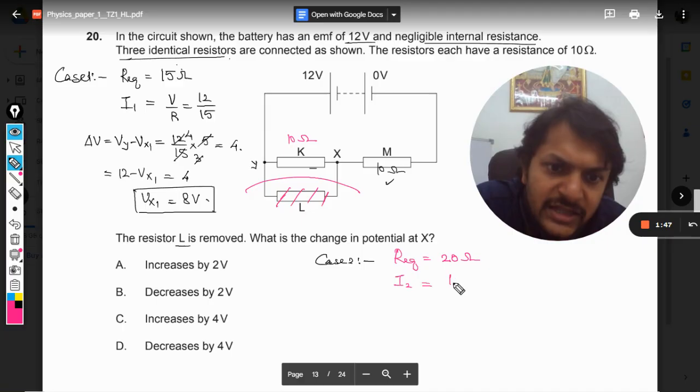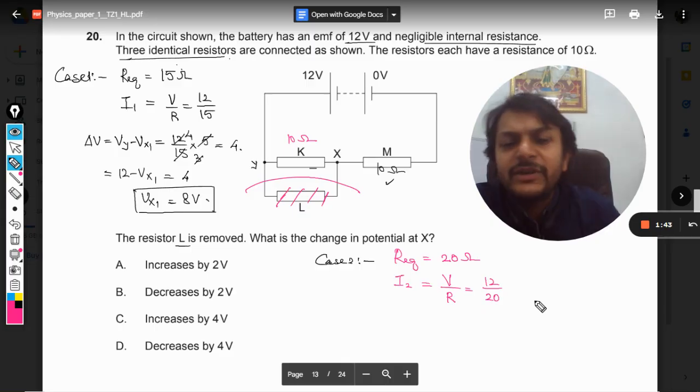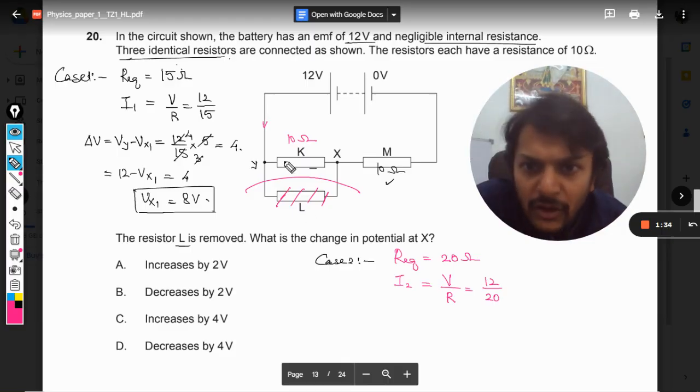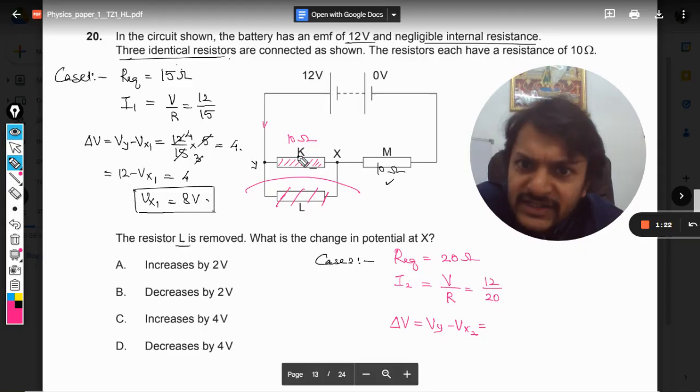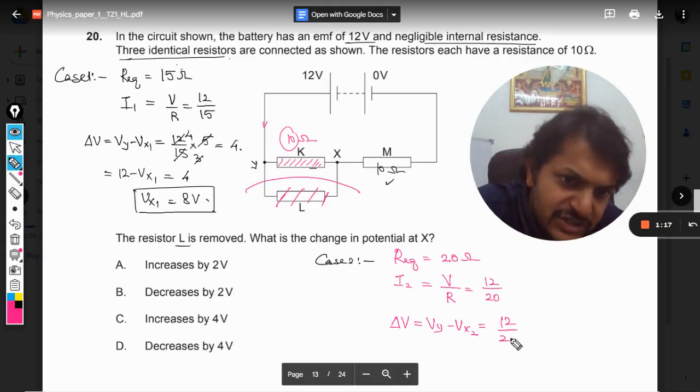So what is the current in the second case? The voltage is still 12, so it will be 12 divided by 20. So this is the current now which is coming out of the battery. Now this resistance is 10 ohm and we want to find the delta V, that is Vy minus Vx in case 2. This will be equal to IR. So what is the resistance now? 10, it is not 5 in this case.